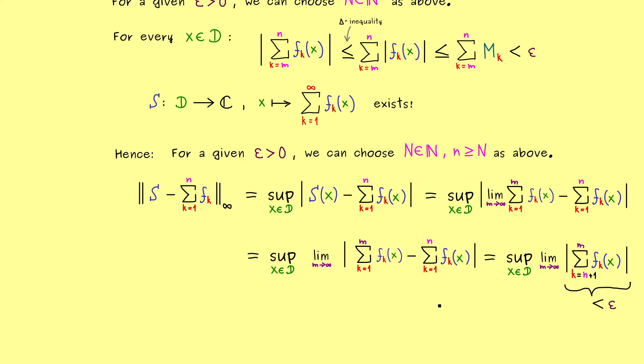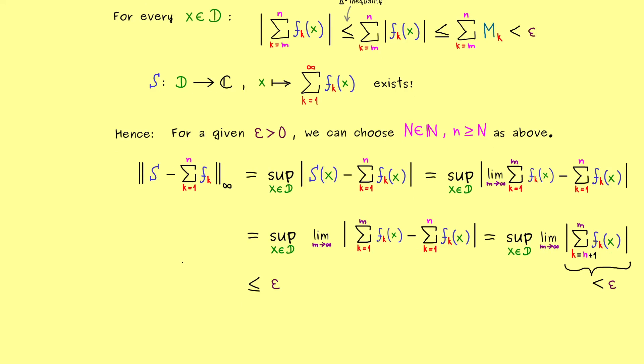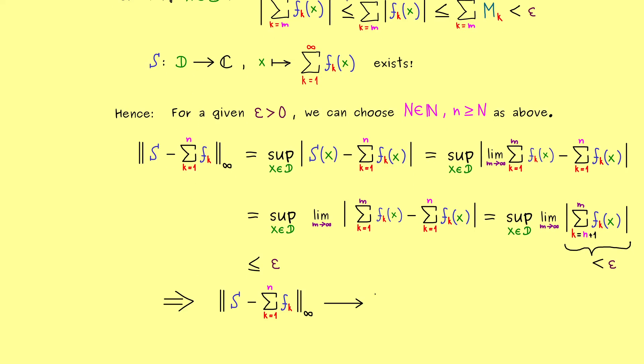Hence the conclusion is, even with the limit and with the supremum, we stay lower epsilon. The only thing we can lose here is the strict inequality. But obviously this does not change anything, because epsilon was arbitrarily chosen from the beginning. And with that we have it. This means that in the limit n to infinity, this norm here goes to zero. And since we have the supremum norm, this is exactly the uniform convergence. Therefore, this is already the whole proof.